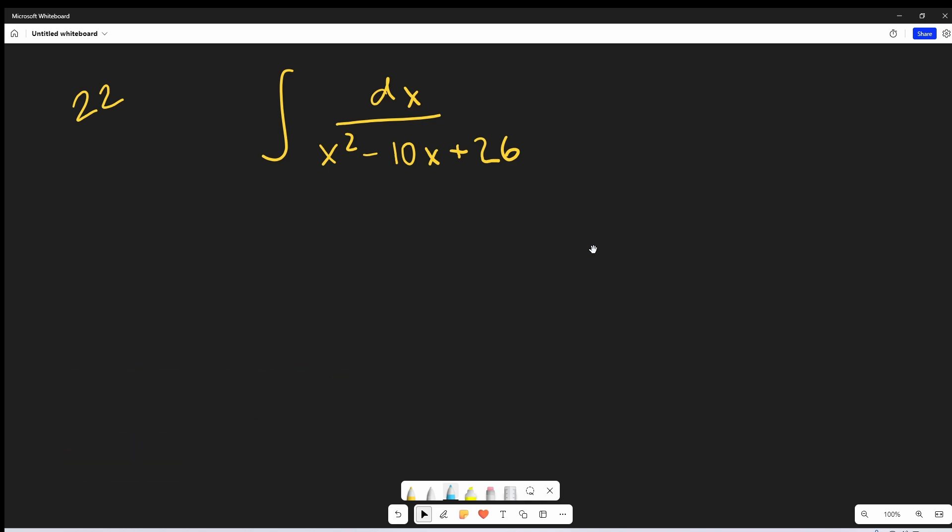Just looking at this numerator, it's looking like what we need to do is complete the square. We can't just factor this with integers. So we can look at our x squared minus 10x. Taking half of minus 10 is minus 5.